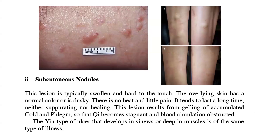Subcutaneous nodules: This lesion is typically swollen and hard to touch. The overlying skin has a normal color or is dusky. There is no heat and little pain. It tends to last a long time, neither separating nor healing. This lesion results from gelling of accumulated cold and phlegm so that qi becomes stagnant and blood circulation obstructed. The yin type of ulcer, which develops in sinews or deep in muscles, is of the same type of illness.